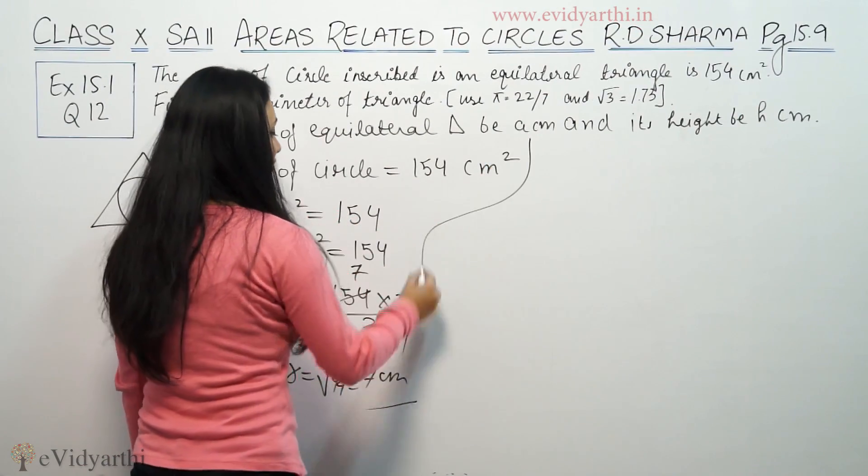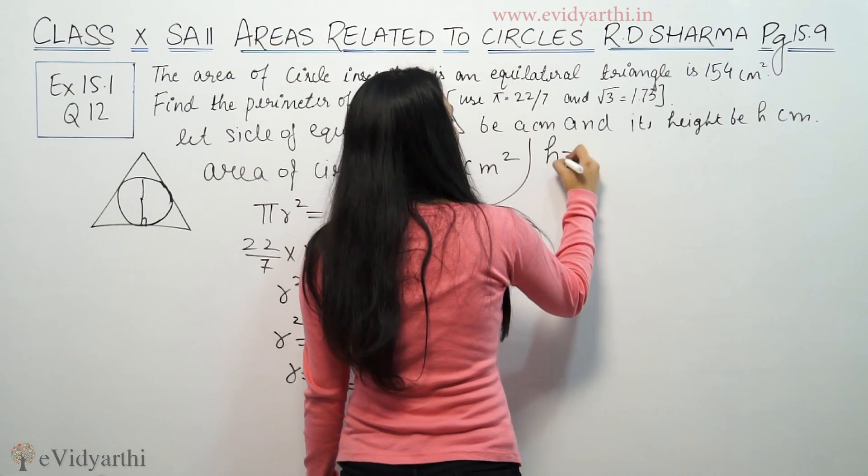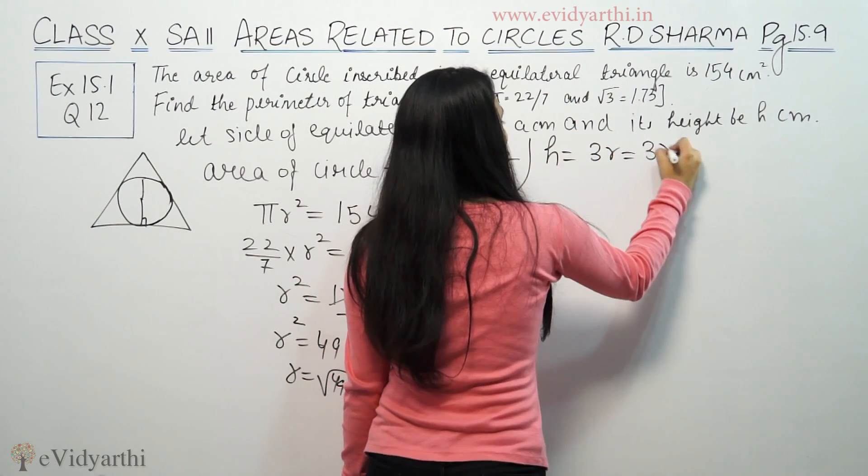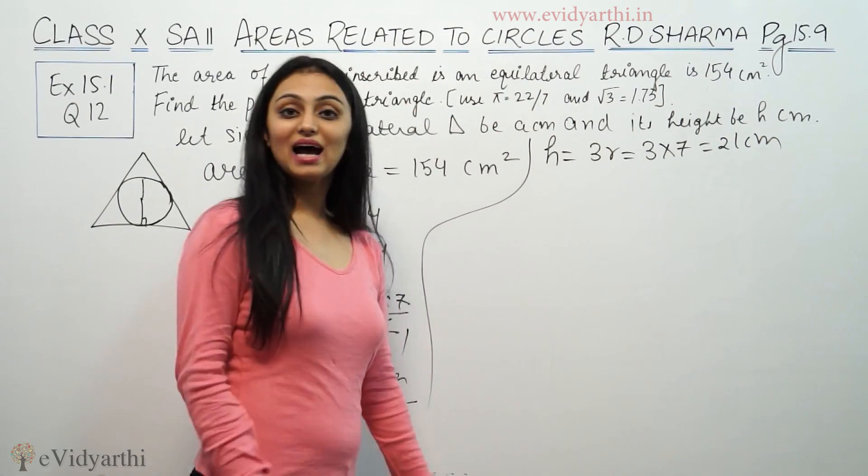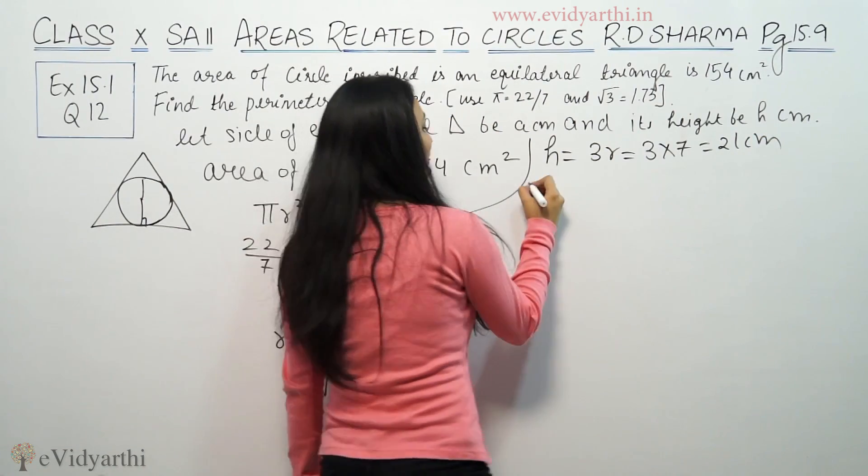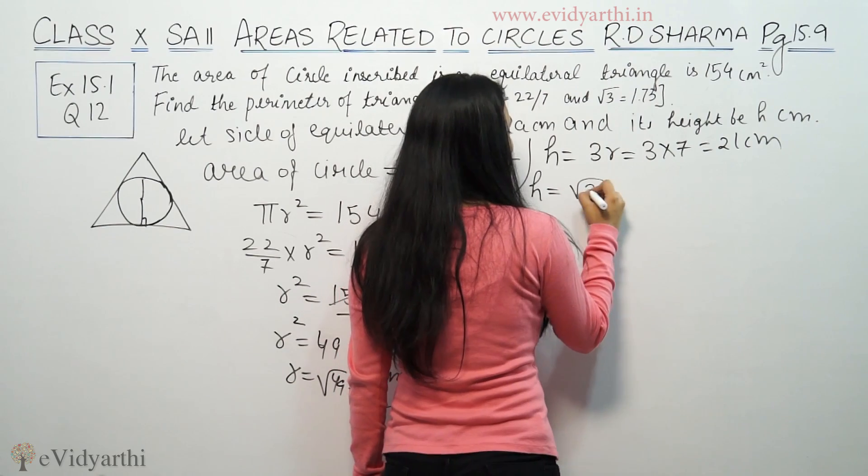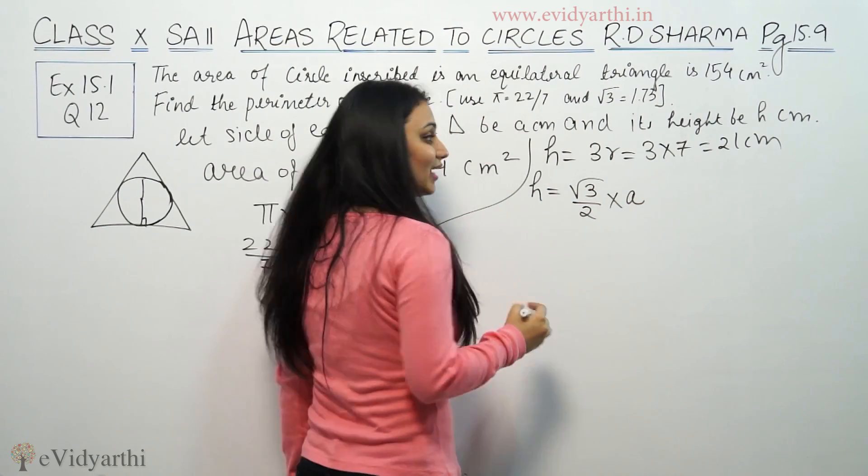Now, the height of an equilateral triangle is equal to 3r. That means 3 times 7, which is 21 centimeters. This is the height of the equilateral triangle. The height equals √3/2 times the side a.